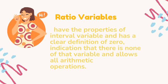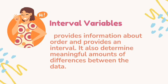For age, for example: 20 years old, 10 years old, 2 years old, 1 year old, and 3 years old. Ratio variables answer questions such as what is your height in feet and inches and what is your weight in kilograms. For interval variables, they provide information about order and provide an interval. They also determine meaningful amounts of differences. Interval variables are one of the two types of quantitative variables, take numeric values, and may be classified as a continuous variable type. Arithmetic operations can be performed on interval variables; however, these operations are restricted to only addition and subtraction. An example is temperature.